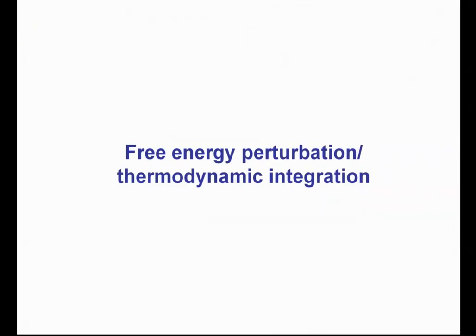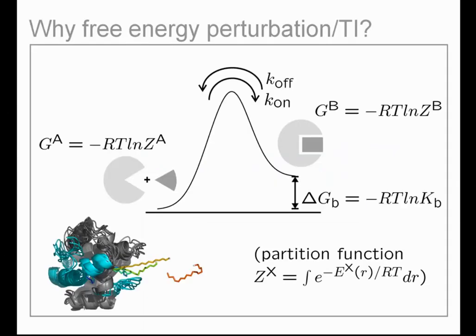Now let's switch to alchemical methods, which traditionally are known as free energy perturbation or thermodynamic integration methods. We can look at the barrier of binding a molecule to a receptor — again a barrier that may be too high to overcome on short timescales. We could apply something like umbrella sampling to go from the unbound state to the bound state and compute the associated free energy profile, and from the difference between bound and unbound we would know the binding affinity of the molecule to the receptor.